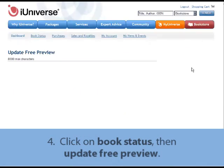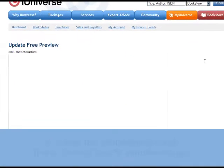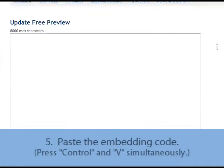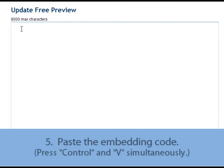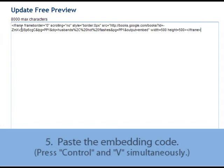When the next screen appears, click inside the Update Free Preview field, and then to paste your code, press Ctrl and the letter V simultaneously on your keyboard. You should then see the code you copied from the Google Books website. If you don't see the code, go back to Google Books and try recopying the code as shown earlier.